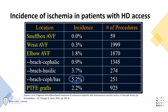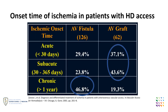The incidence of hand ischemia in patients with HD access ranges from under 1% in forearm fistula to over 5% in the antecubital-based fistula with both cephalic and basilic outflows. Onset of ischemia after AV graft placement commonly occurs in the acute phase within 30 days after surgery, or subacute phase within a year of access placement, while ischemia after fistula placement is more likely to occur later after the access has been used for several years.